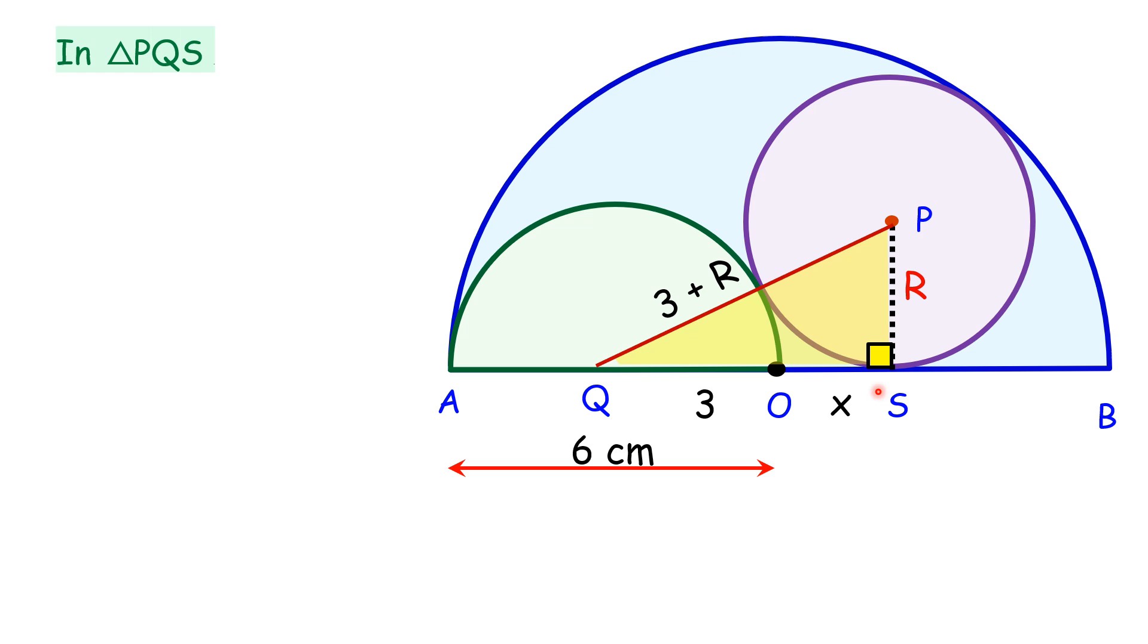Applying Pythagoras theorem, we will get (3 + X)² + R² = (3 + R)². Opening up the bracket and simplifying, we will cancel out R² on both sides. Also, we will cancel out 9 on both sides. Simplifying, we get X² + 6X = 6R.